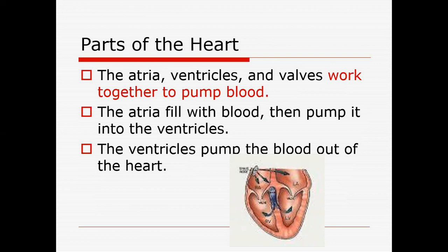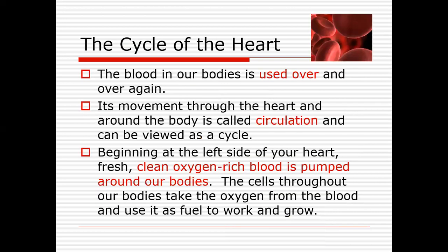When the atria contract, there is a brief gap, and then the ventricles contract. The atria fill with blood and then pump it into the ventricles. The ventricles then pump the blood out of the heart. The blood in your body is used over and over again, and its movement through the heart and body is called circulation, which can be viewed as a cycle.